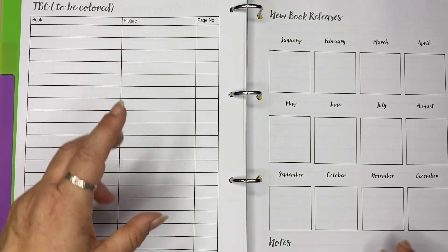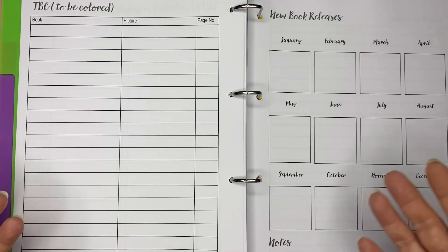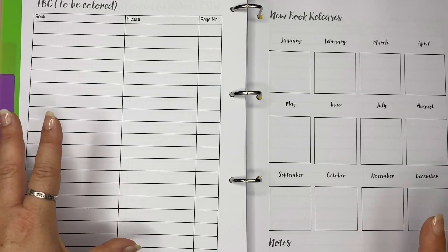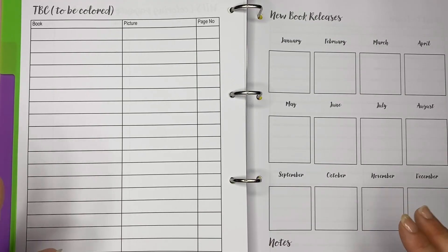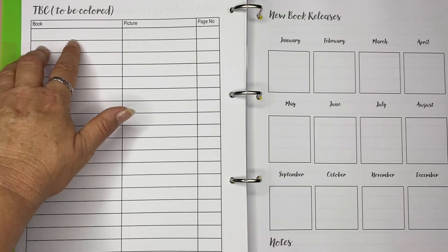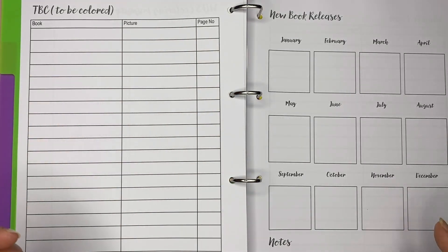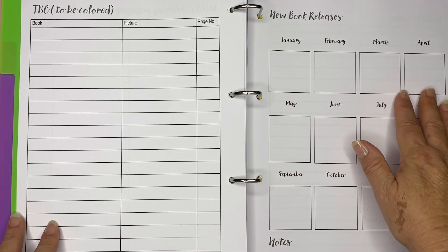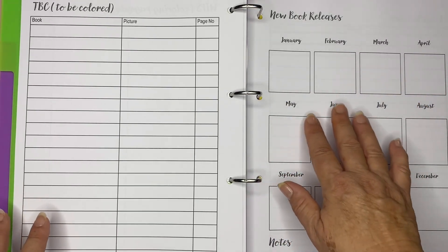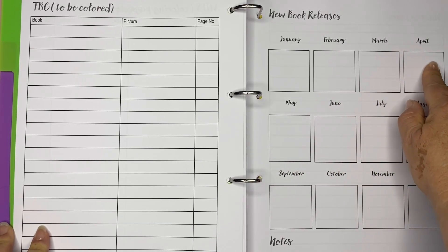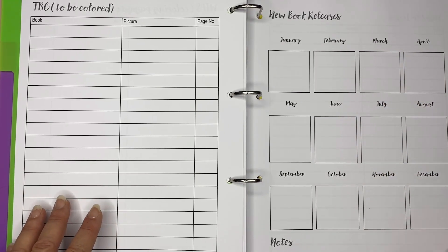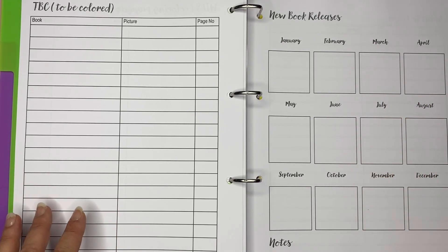This is the To Be Coloured. I often review a book and I look at a picture, especially if it's seasonal, like Halloween or Christmas. And I go, oh, I'll colour that then. And then I forget all about it. So I can write down here what book it is and what picture. And I can even put in page number if I'm a good girl. I mean, quite frankly, I'm probably not. And I can also keep track of new book releases. So there might be books coming out in April that I want to keep an eye on so I can write it there and just refer to the spot because that might be something that I might want to buy.